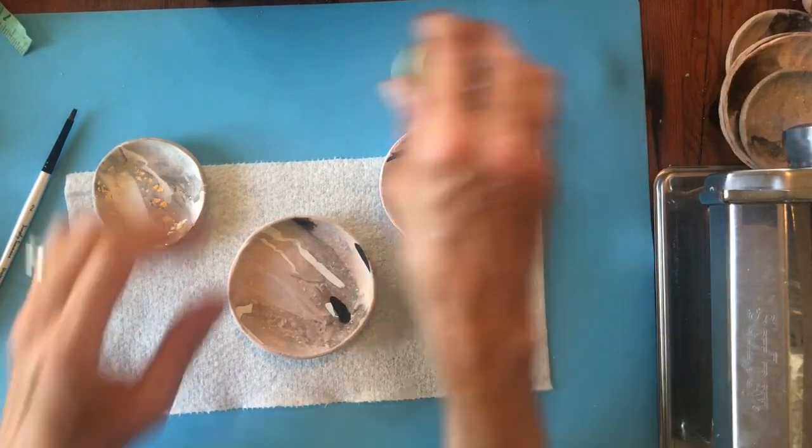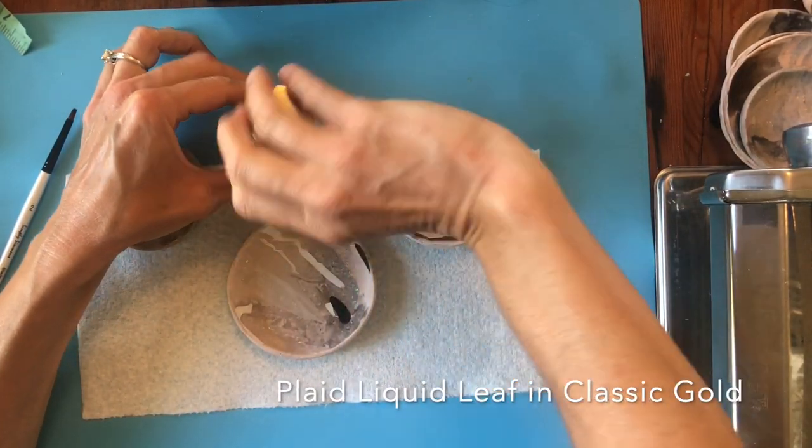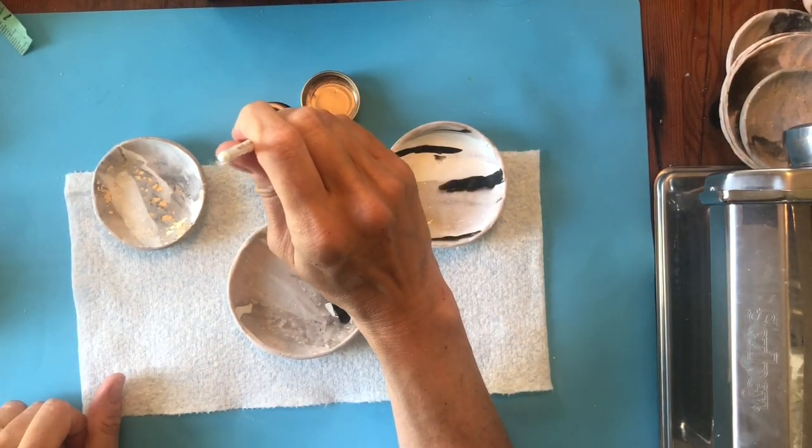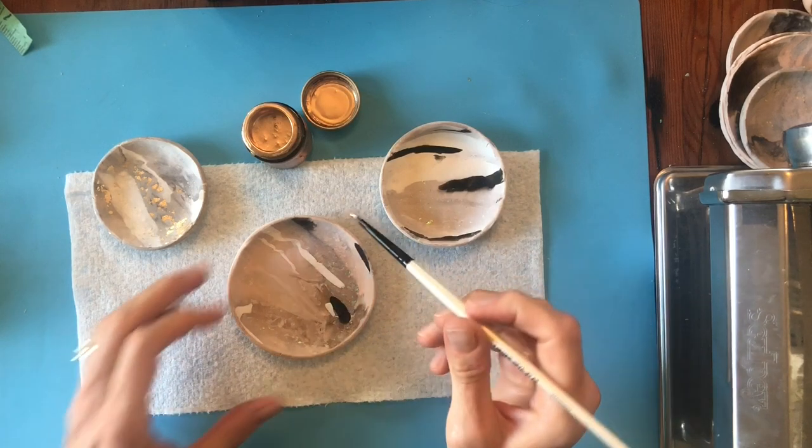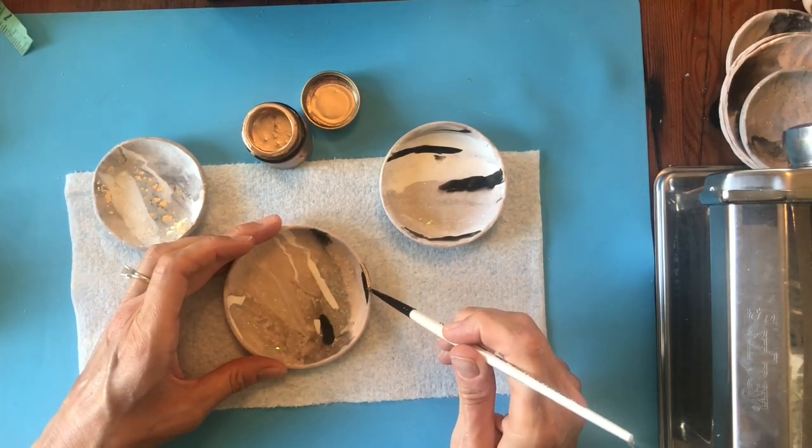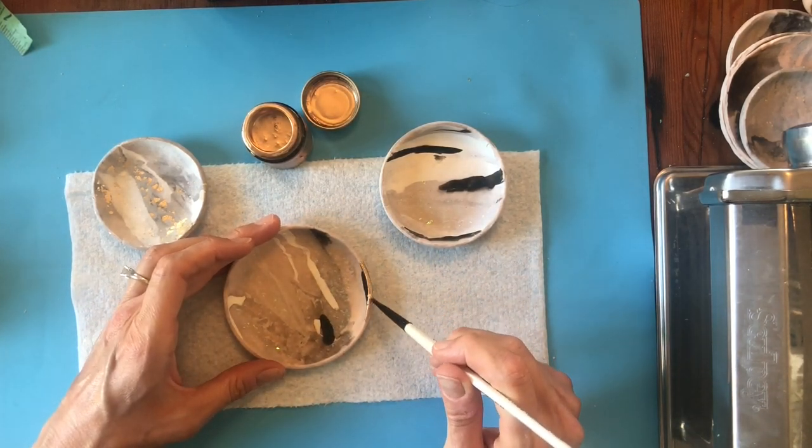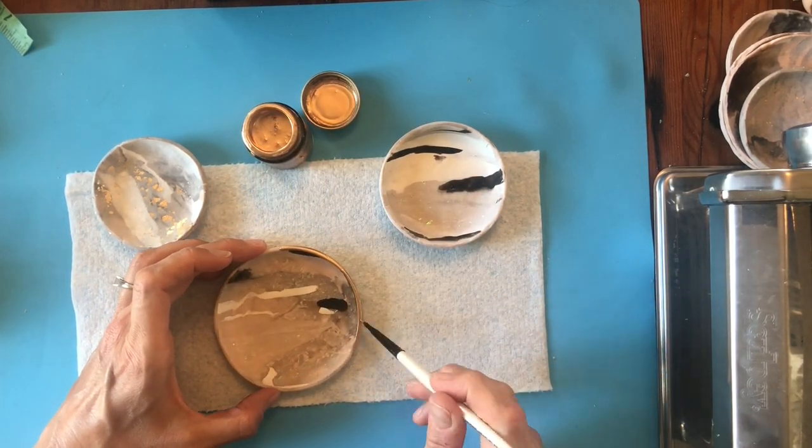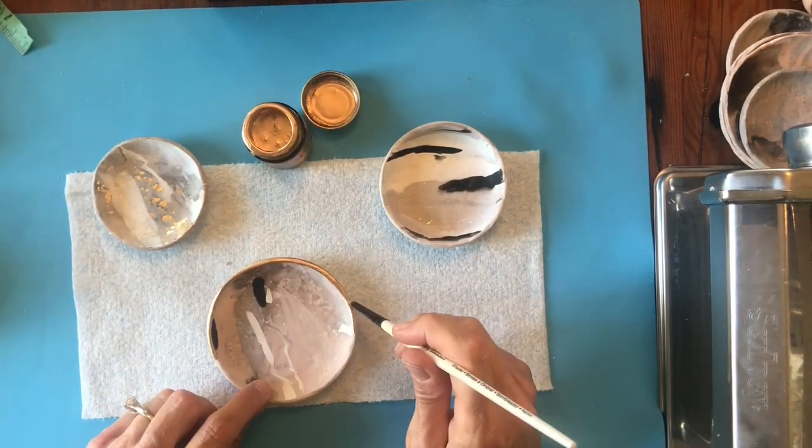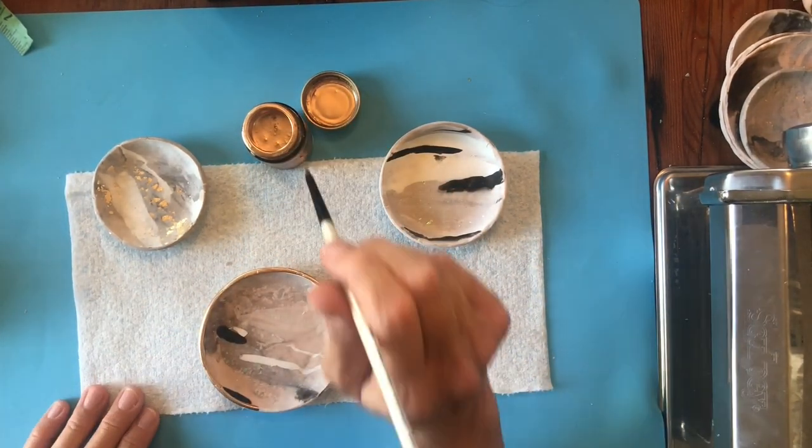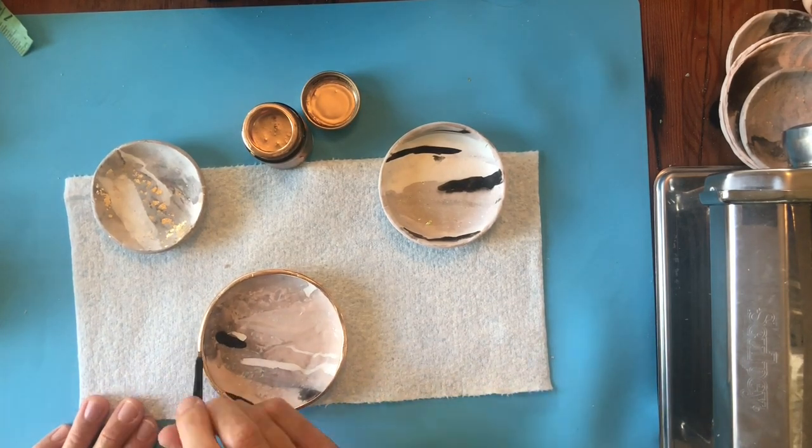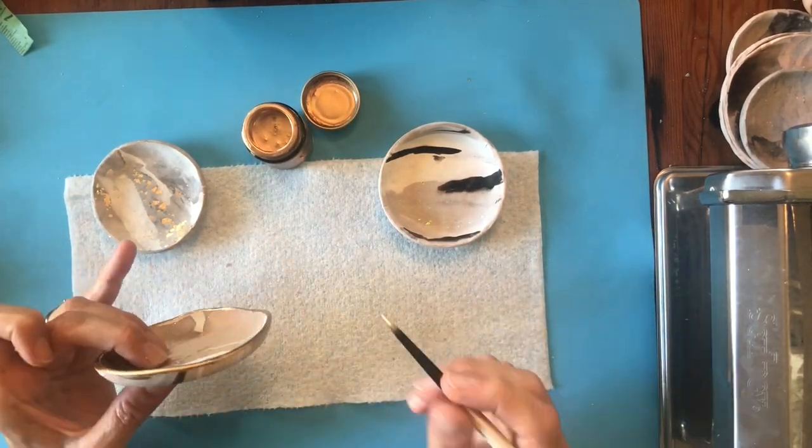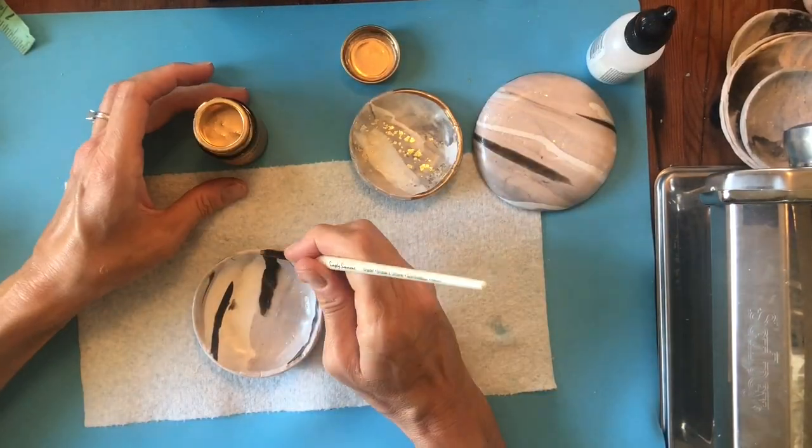Now for my favorite part the gold leafing. The best liquid leaf by far in my opinion is Classic Gold by Plaid and I'll leave the link for it below along with everything else I use in this video. I'm using a smaller smooth synthetic brush this time. I'm careful to cover the edge but I don't want this to be perfect. Again I love it looking handmade. Quick note for gold leafing clay you don't want to glaze over gold leaf or it will tarnish and darken and become kind of sticky so always glaze before you leaf and be sure to let the liquid leaf dry completely before touching it usually at least a couple of hours.